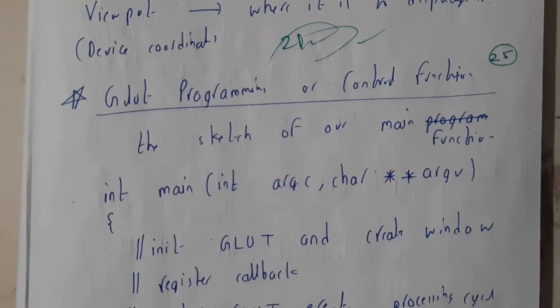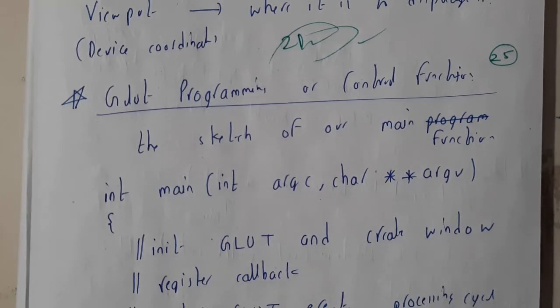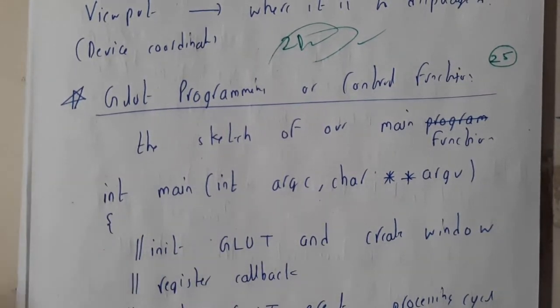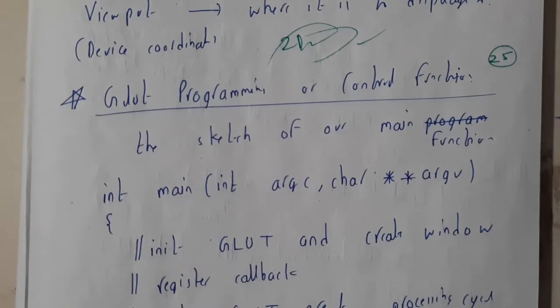The code which you write in the main block, like void main or int main(int argc, char **argv) for the command line - inside that whatever you write, those are nothing but your GLUT programming or GLUT functions, basic important functions.